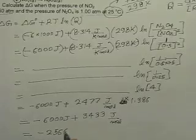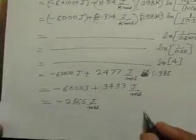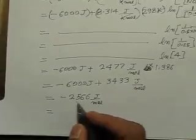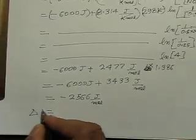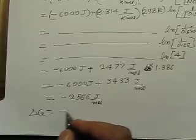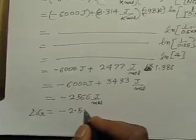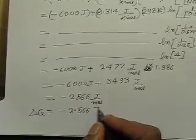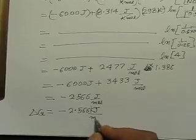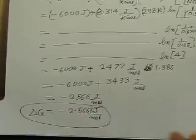Minus 2566 joules per mole. Usually we represent this delta G in kilojoules per mole, so we have to divide by 1000 and it will come 2.566 kilojoules per mole. So this is the way we calculate delta G if delta G standard molar...